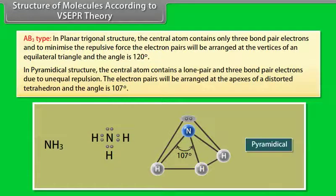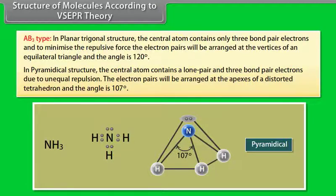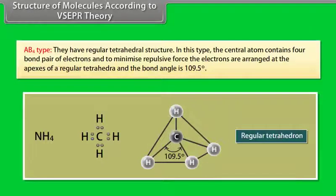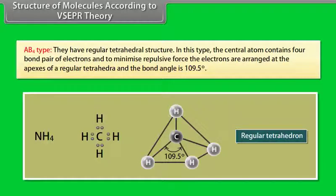In AB4 pyramidal type, the central atom contains one lone pair and three bond pair electrons. Due to unequal repulsion, the electron pairs are arranged at the apexes of a distorted tetrahedron with a bond angle of 107 degrees. In the regular AB4 tetrahedral type, the central atom contains four bond pairs; to minimize repulsive force, the electrons are arranged at the apexes of a regular tetrahedron with a bond angle of 109.5 degrees.